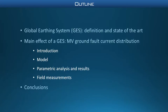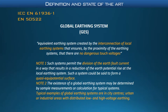Let's start with the definition of global earthing system. International standards define GES as an equivalent earthing system created by the interconnection of local earthing systems that ensures, by the proximity of the earthing systems, that there are no dangerous touch voltages. Moreover, they state that such systems permit a division of the earth fault current in a way that results in a reduction of the earth potential rise at the local earthing system. Such a system could be said to form a quasi-equipotential surface.